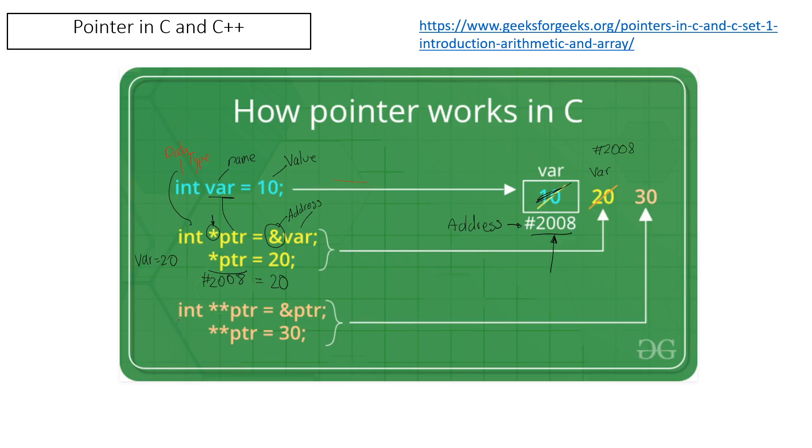Then we have a second pointer, a pointer of a pointer. Here you are giving the second pointer the address of the first pointer, 2008, and then we are assigning 30. So at the end the variable in memory allocation 2008 will be 30.